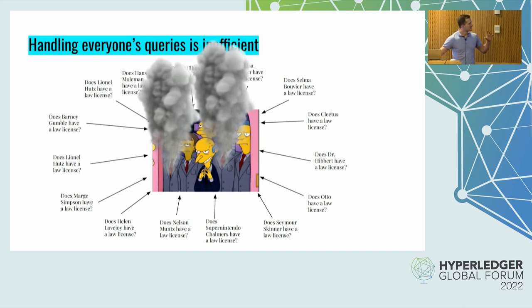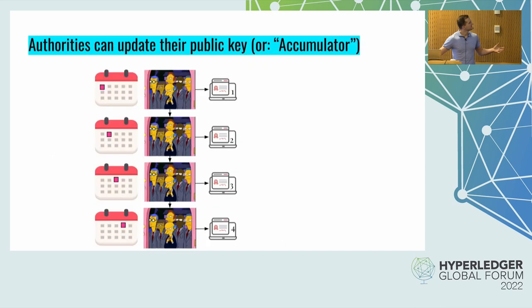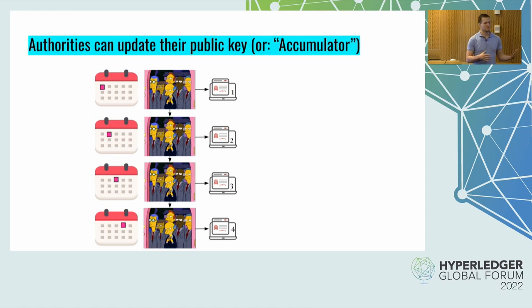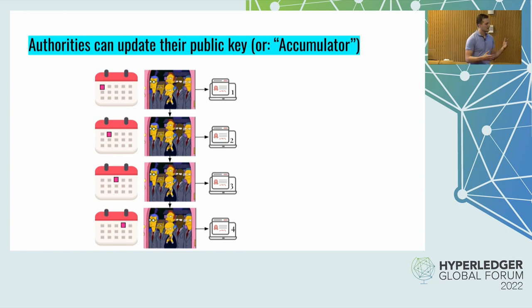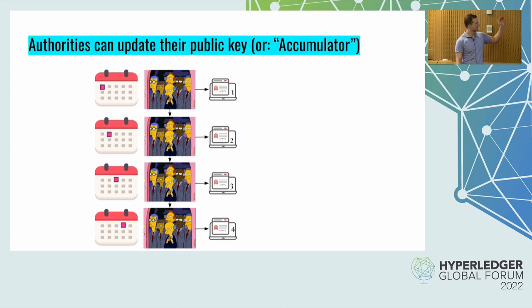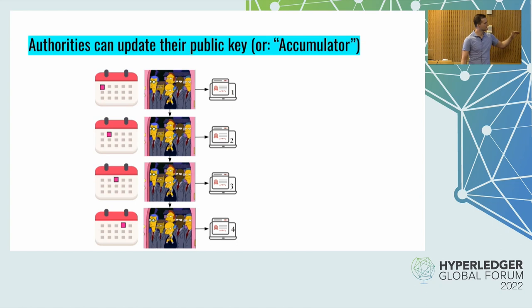What these authorities can do is update their public key essentially — and at this point I'll start calling it an accumulator. If you're familiar with accumulators, this will feel like a very bizarre way to introduce them. But as we worked on this, the function got closer and closer to digital signatures. I think a sensible way to view them is as a digital signature that you just update fairly regularly. The calendar days progress and they update from 1 to 2 to 3 to 4.